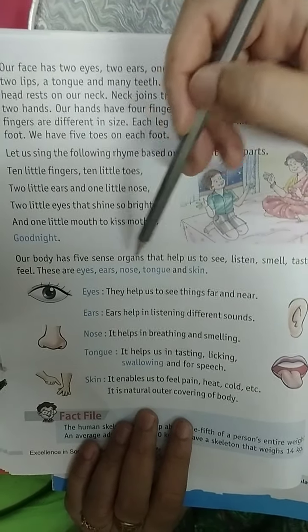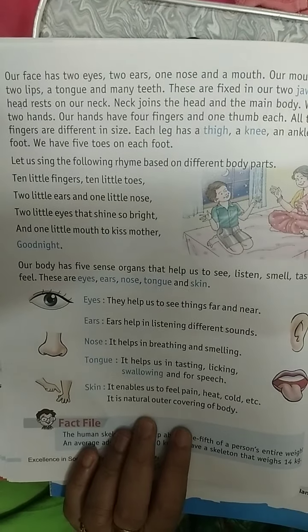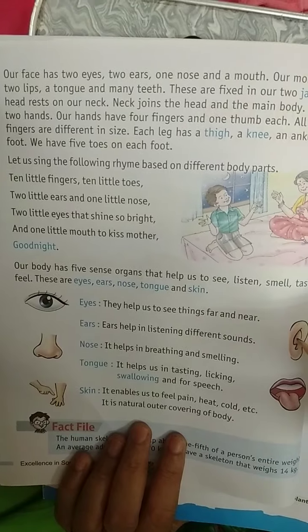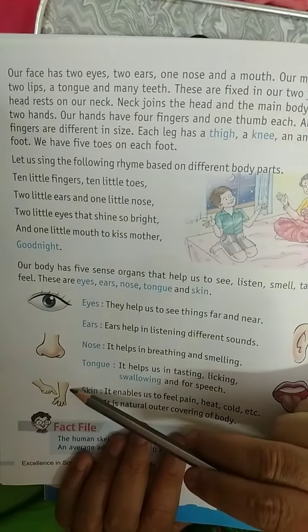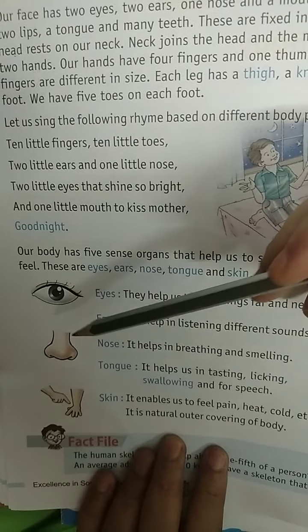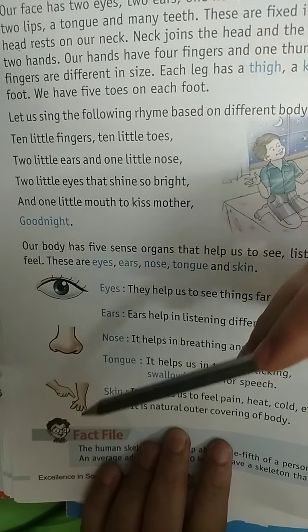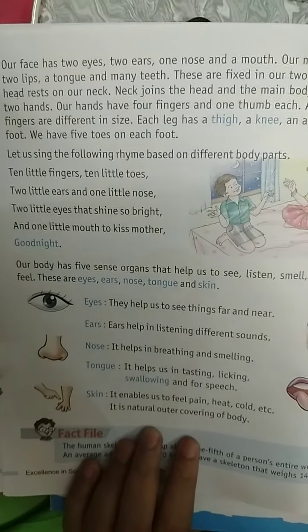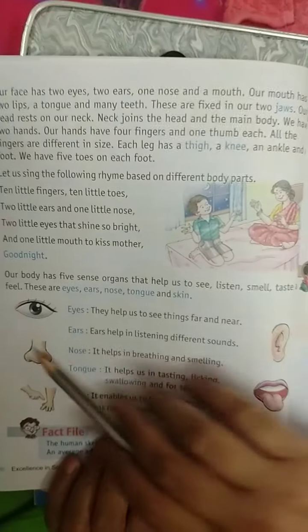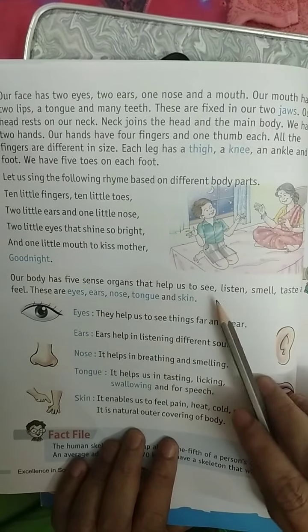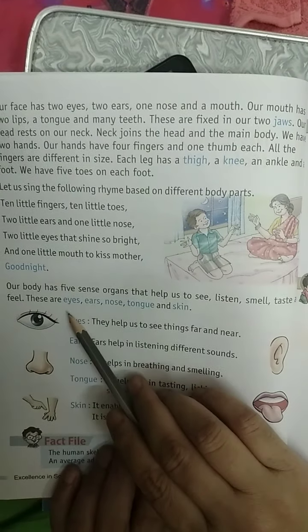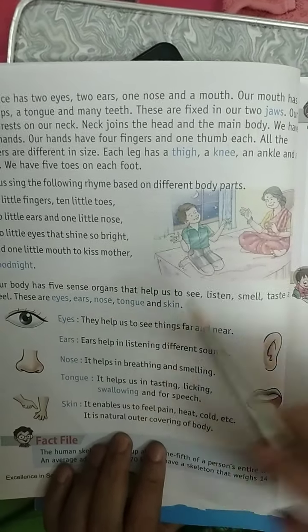Our body has five sense organs that help us to see, listen, smell, taste, and feel. These are: eyes, ears, nose, tongue, and skin.